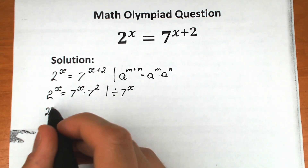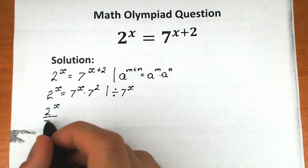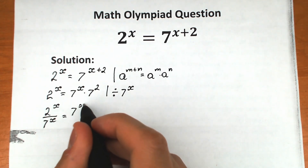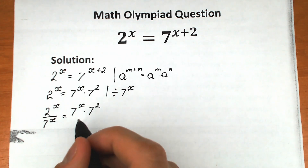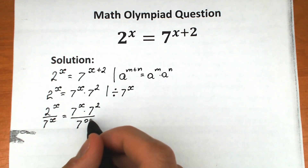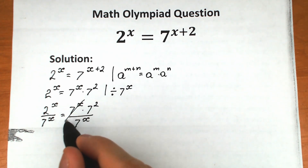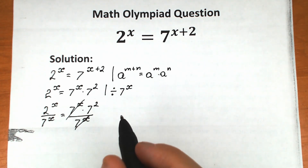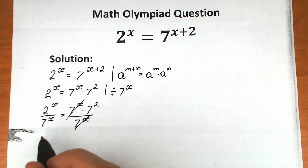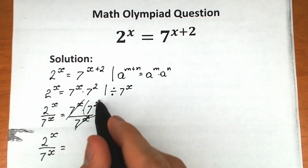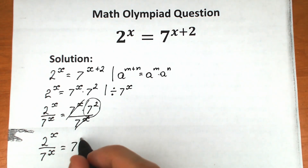Let's work this out in a new line. We have 2 to the power x divided by 7 to the power x, and we divide the right-hand side expression by 7 to the power x as well. We cancel the 7 to the power x on the right, giving us 2 to the power x over 7 to the power x equals 7 squared — so only 7 squared remains on the right-hand side.